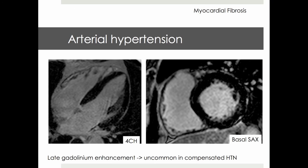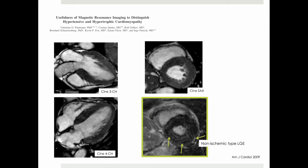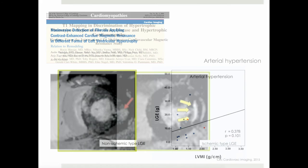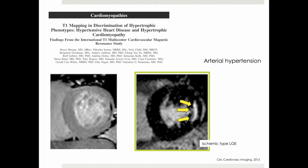In arterial hypertension, late gadolinium enhancement or replacement fibrosis is an uncommon feature of compensated hypertensive left ventricular hypertrophy. If present, it can be ischemic or non-ischemic. Non-ischemic type of late gadolinium enhancement is commonly nonspecific, without predilection site, and without a particular relationship with left ventricular remodeling. Alternatively, the pattern can be ischemic, subendocardial, and relates to concomitant coronary artery disease, for which hypertension is a recognized risk factor.